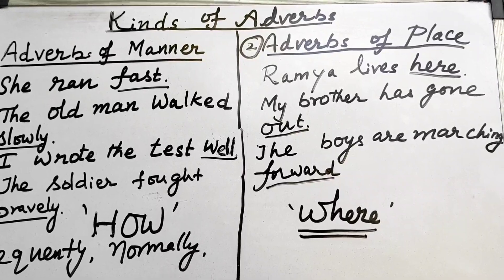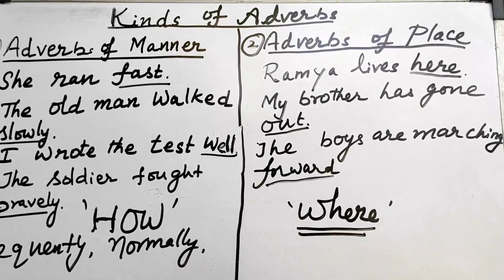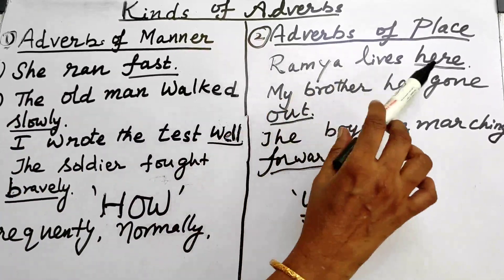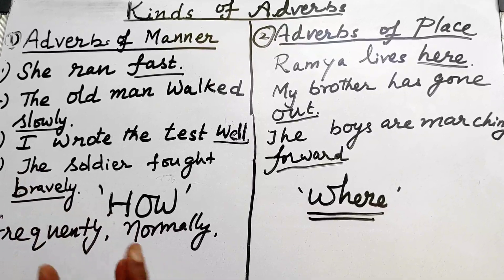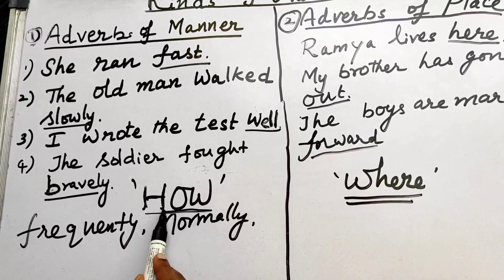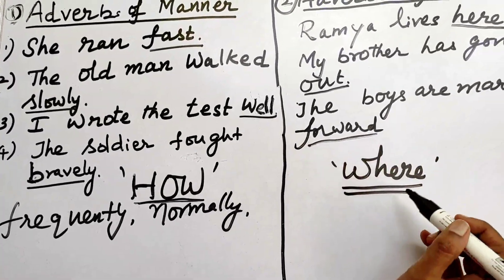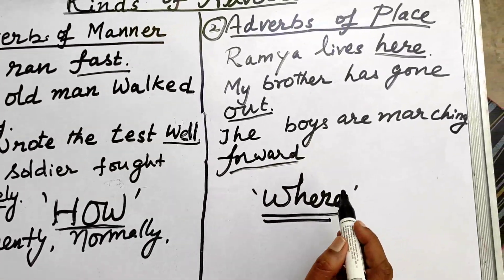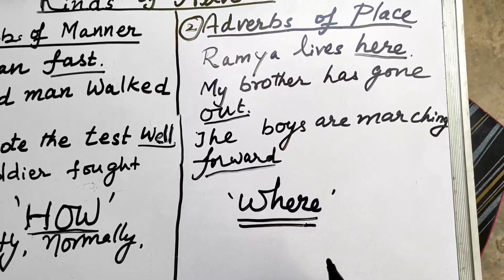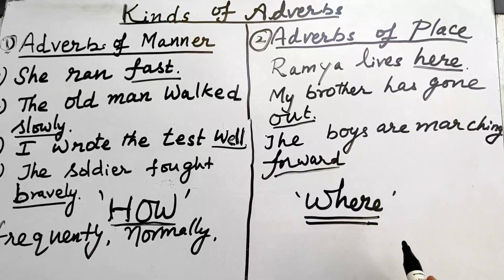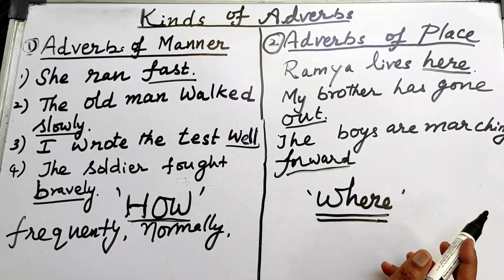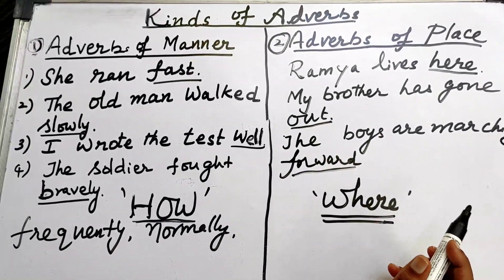So now you have seen two kinds of adverbs — there are actually more than six kinds in total. The first is adverb of manner, which gives the answer for the question 'how.' The second is adverb of place, which gives the answer for the question 'where.' Are you clear, children? Let us move on to the next kinds.